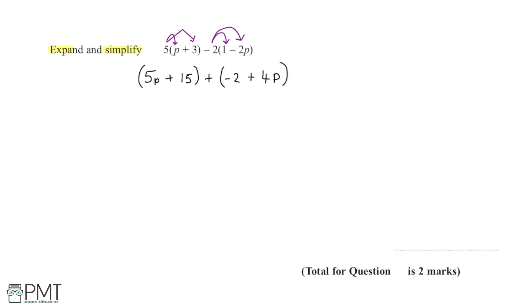So then I can add these two brackets together, collect the p's together and collect the numerical values together. For the p's we have 5p plus 4p, and to that we need to add on 15 minus 2, which leaves us with 9p plus 13.